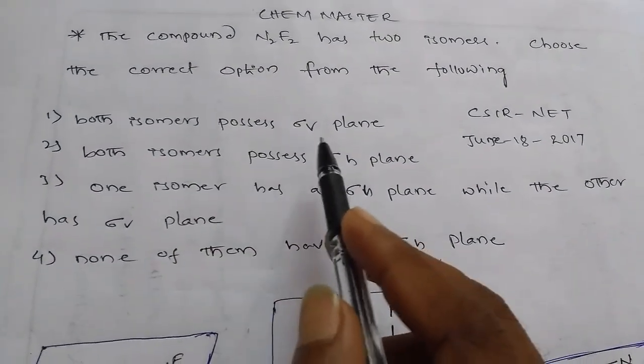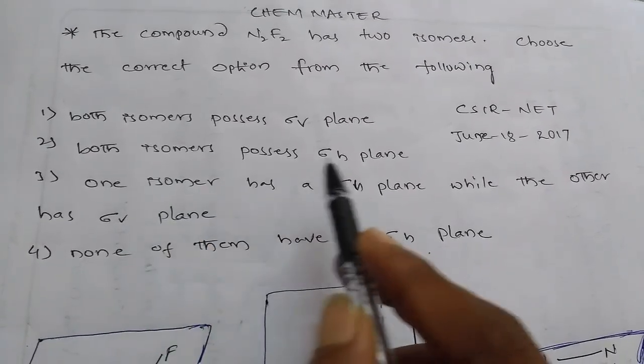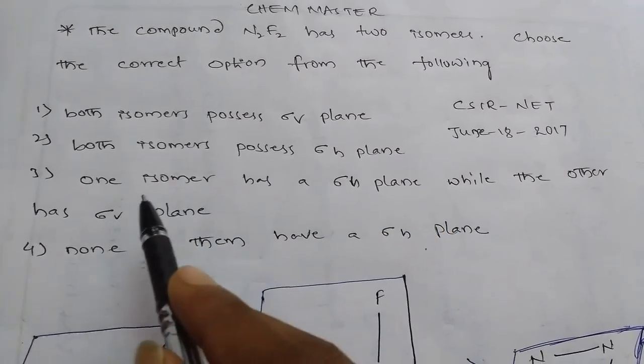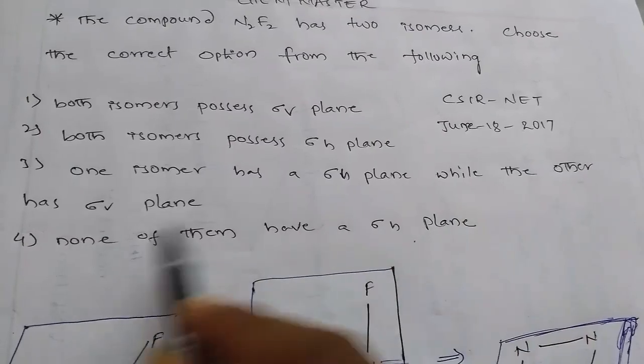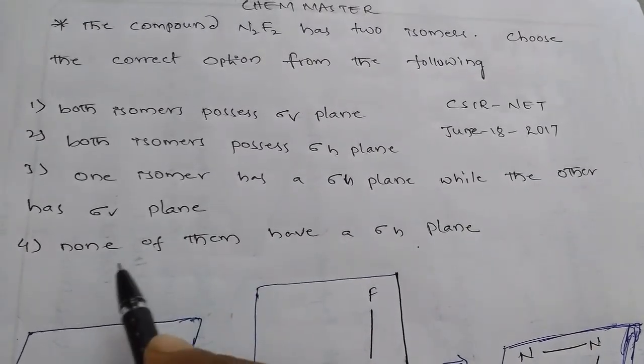First one is both isomers possess sigma V plane. The second option is both isomers possess sigma H plane. Third one, one isomer has a sigma H plane while the other has sigma V plane. And fourth one is none of them have a sigma H plane.